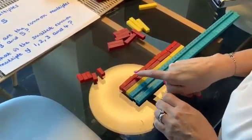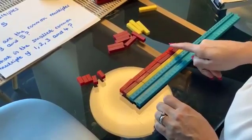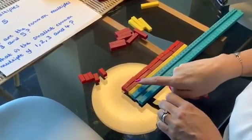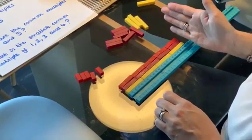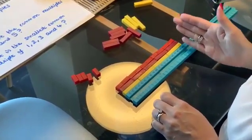So we can see that one, two, three, four, five, six, seven, eight, nine, ten. Ten twos make 20, five fours make 20, and four fives make 20. So a common multiple of two, four and five is 20.